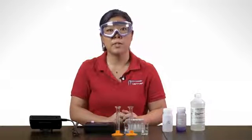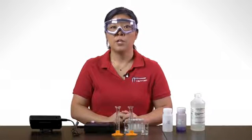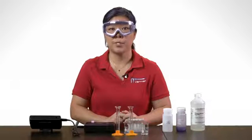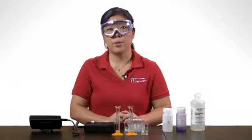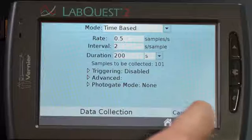Decide on an interval and duration for your data collection and make any necessary changes. You can do a trial run and use the default settings to check how long the reaction proceeds, and how often you should record a reading of absorbance from the spectrometer. I will be using the default settings and tapping on OK to complete the action.